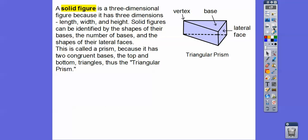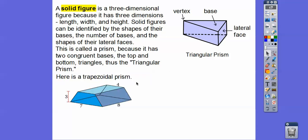This is called a prism because it has two congruent bases — the top and the bottom — and they're both triangles, so it's called a triangular prism. Here's a trapezoidal prism. Notice the front piece is the base — it's a trapezoid. In the very back there's a mirror image, the same congruent figure. The lateral side pieces are all rectangles, and the two bases are congruent trapezoids — that's why it's called a trapezoidal prism.